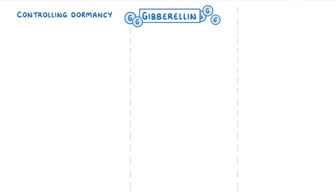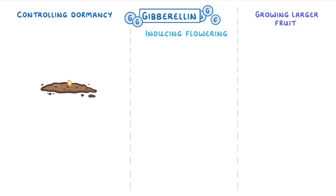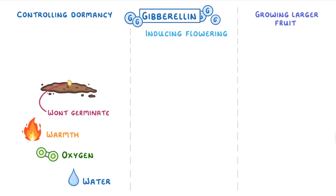Next up we have gibberellin, which also has three main uses: controlling dormancy, inducing flowering, and growing larger fruit. If you think of a seed sitting in the soil, it won't germinate and start growing until the conditions are just right — for example, the right levels of warmth, oxygen, and water. We call this period before growth starts dormancy.